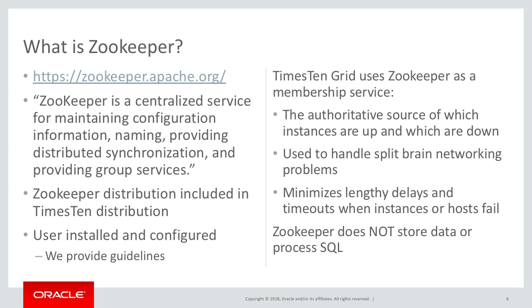ZooKeeper is also used to minimize lengthy delays or timeouts when instances fail. For example, internally, if we have established a connection from one instance to another and that connection fails, before we try to reestablish it and wait for a long timeout, we'll ask ZooKeeper whether that other instance is up. If ZooKeeper says it's down, we don't even bother to reestablish that connection — which saves the user from waiting 30 or 60 seconds for a timeout. It's important to note that ZooKeeper doesn't store data or process SQL; it only keeps track of metadata about the grid.